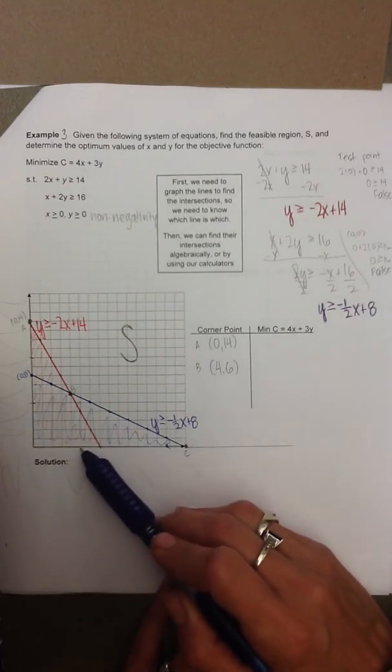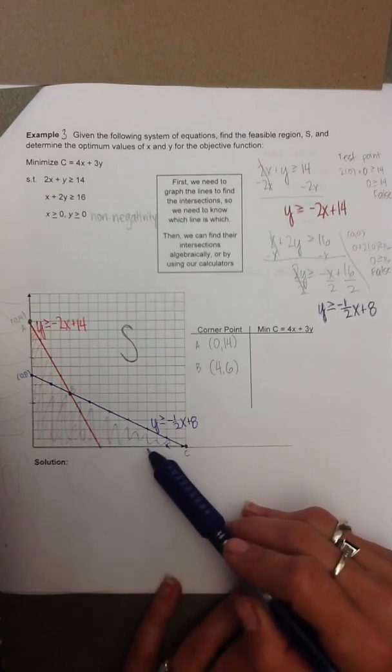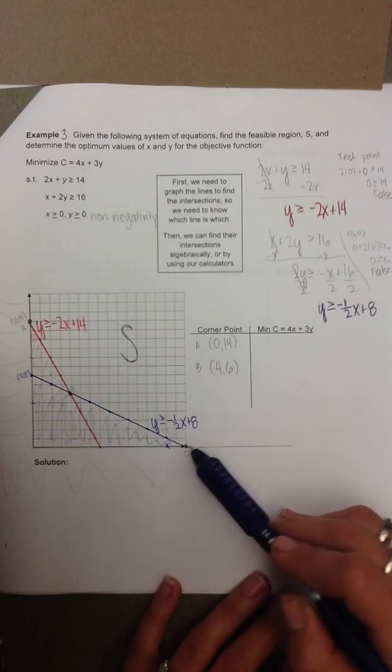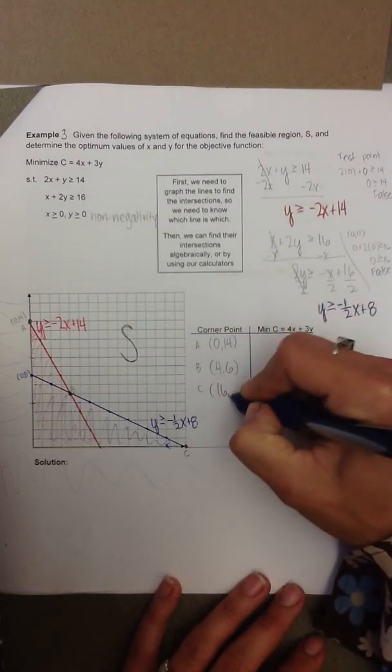1, 2, 3, 4, 5, 6, 7, 8, 9, 10, 11, 12, 13, 14, 15, 16. So that's the point 16, 0.